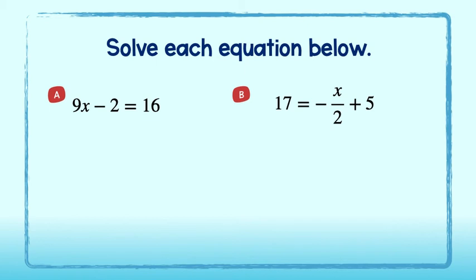Keeping that in mind, try a couple of examples on your own. Remember to isolate x using the properties of equality by first getting rid of the constant and then the coefficient.